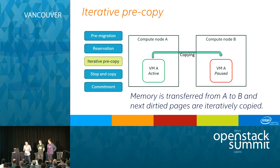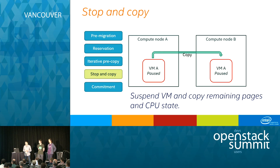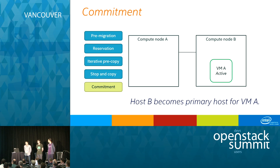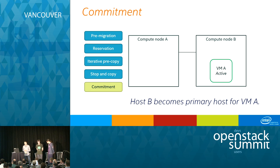When the VM state is nearly the same on both hosts, the hypervisor pauses the VM on compute node A and transfers the remaining state to compute node B. When both states are actually the same, it starts the VM on compute node B and removes it from compute node A. In case of any failure, everything can be rolled back so that the VM will continue to run on compute node A without any disruption.